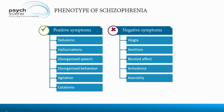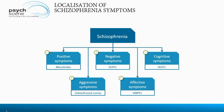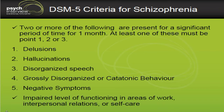Alogia is linked to speech; avolition is linked to movement or motivation. One can also think about the localization of schizophrenia symptoms: positive symptoms arising from the mesolimbic pathway, negative symptoms from the mesocortical pathway, cognitive symptoms again from the mesocortical pathway of the dorsolateral prefrontal cortex, aggressive symptoms or agitation from the orbitofrontal cortex, and affective symptoms from the ventromedial prefrontal cortex. These connect directly to the DSM-5 criteria for schizophrenia.